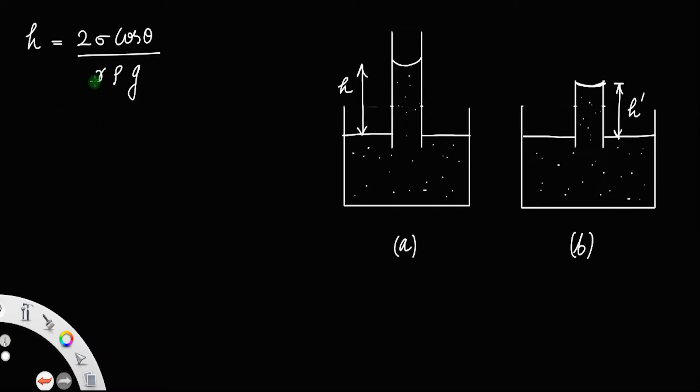We also discussed that the radius of the tube r is related to the radius of the meniscus R by the formula r equals R cos θ, where R is the radius of the sphere forming the meniscus.